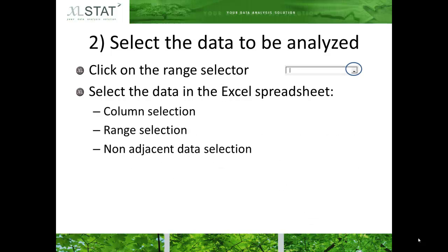To proceed to selection, click on the range selector and select the data in the spreadsheet. You can select the column directly if the data start in the first row, or you may select the range. The variables can be non-adjacent.